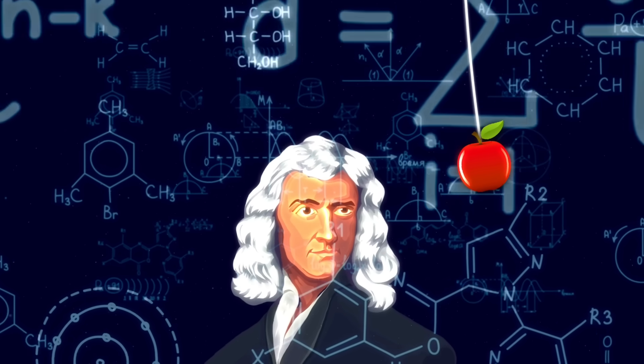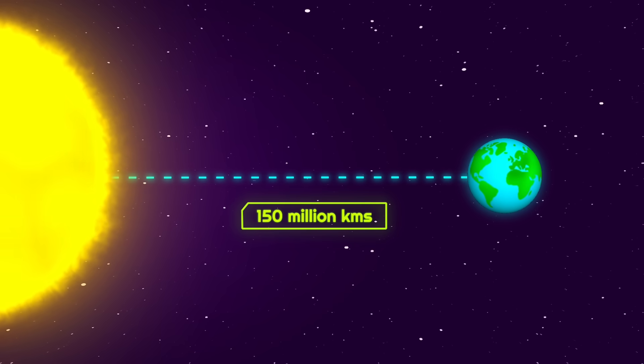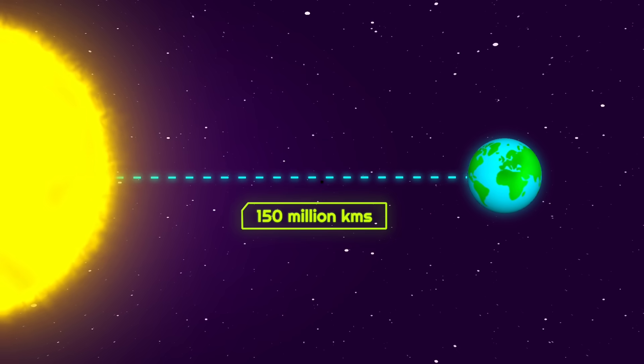But here comes the biggest confusion. The distance between the Sun and the Earth is about 150 million kilometers. Will there be a force for such a distance? For example, if I kick a ball,